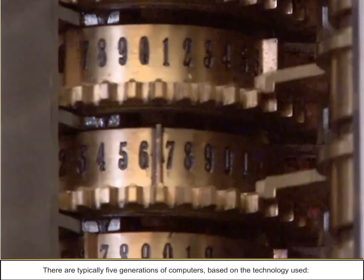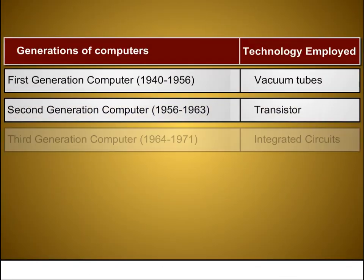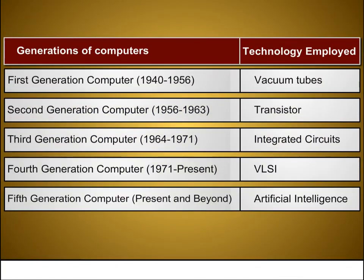There are typically five generations of computers based on the technology used. First generation computer 1940-1956 used vacuum tubes. Second generation computers 1956-1963 used transistors. Third generation computer 1964-1971 used integrated circuits. Fourth generation computer 1971-to-present uses VLSI. Fifth generation computer, present and beyond, uses artificial intelligence.